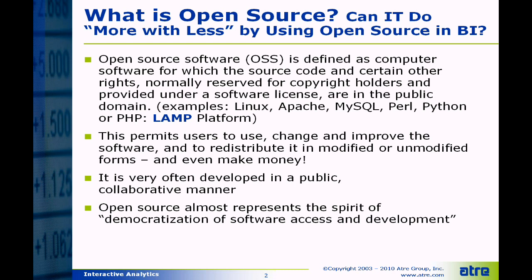OSS is software for which the source code and certain other rights — normally reserved for copyright holders — are provided under a software license in the public domain. Examples are Linux (operating system), Apache (web server), MySQL (database management system), and Perl (language) — sometimes also Python or PHP. Together these form the LAMP platform: Linux, Apache, MySQL, and Perl. If you are a beginner with OSS, you should stick with the LAMP platform, which is used quite frequently.